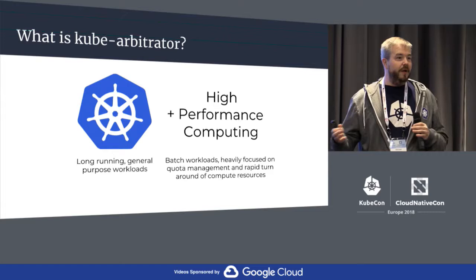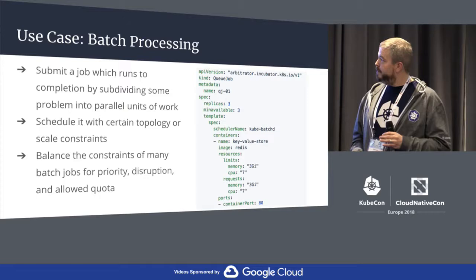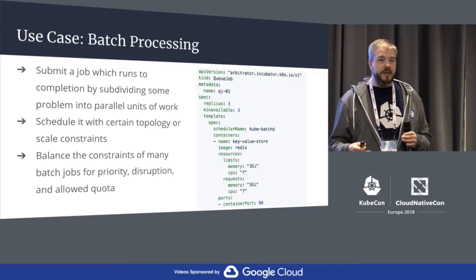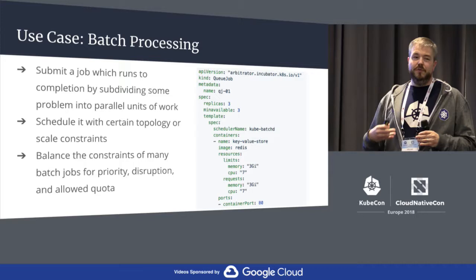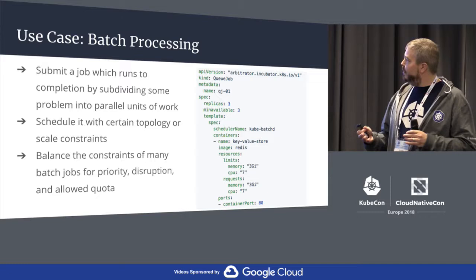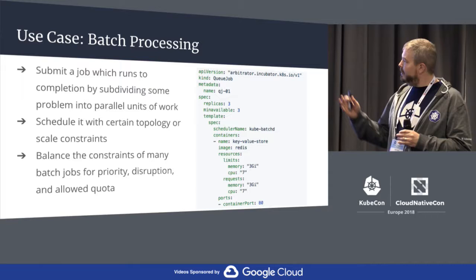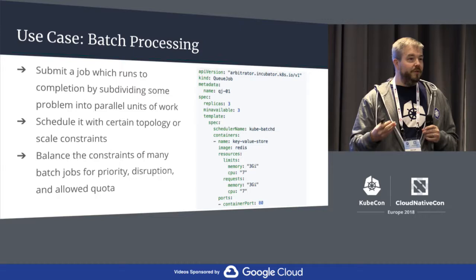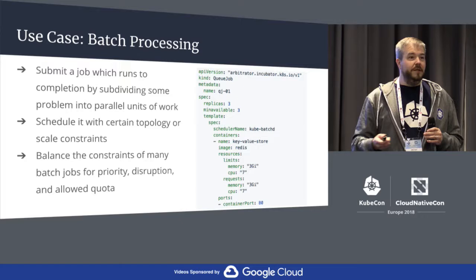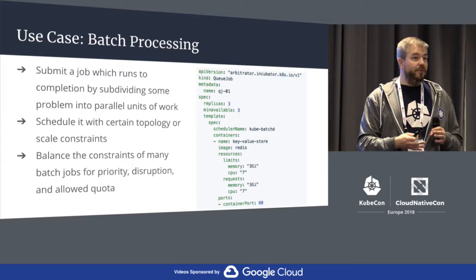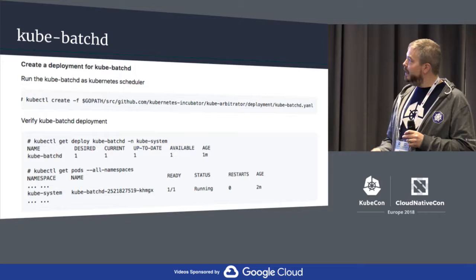Kubernetes is about long-running workloads. High-performance computing is typically about batch processing where I have a specific problem I'm trying to solve and I'm running it through lots of parallel computation. In these batch processing use cases, I'm submitting jobs, balancing how resources are assigned to them, scheduling with certain topologies or constraints. With a queue job resource type, I can specify that a particular bit of work has a certain priority, requires a certain kind of resource, et cetera. I need something to play referee so jobs can be allocated the right amount of resource.